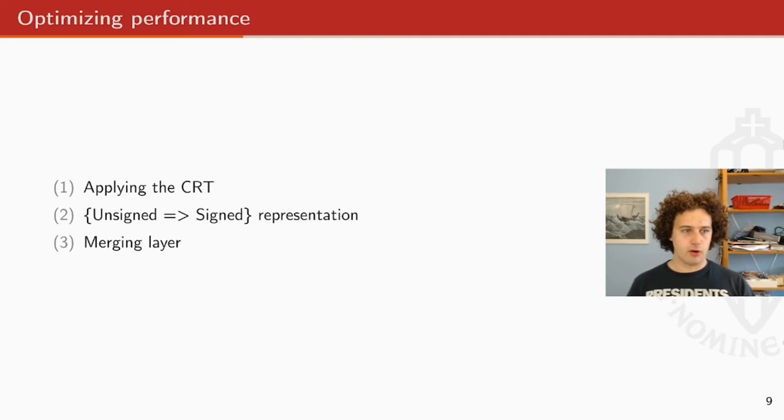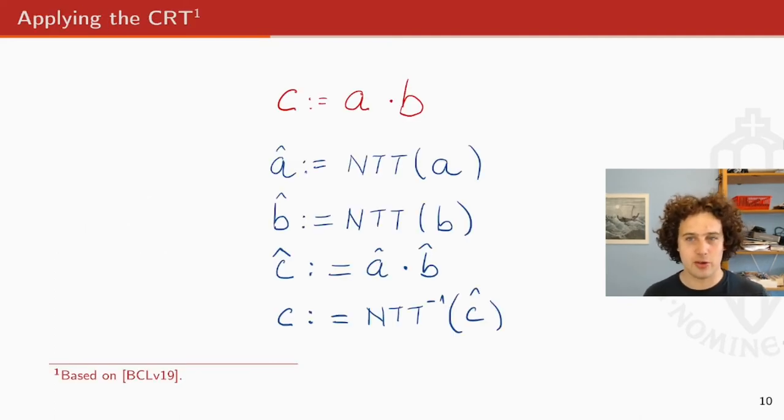I will describe another trick that we thought of but didn't end up using because it didn't actually work. So for optimizing the performance, the three main tricks that we used were, or that we at least tried, tried to apply this Chinese remainder theorem to actually split larger numbers into smaller numbers. The second trick is that we moved from an unsigned to a signed representation based from the previous implementations that our implementation was based on. And then the last optimization that we did is in the number theoretic transform computations, we merged the layers.